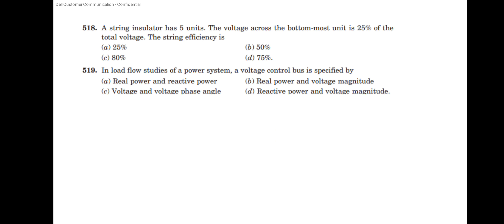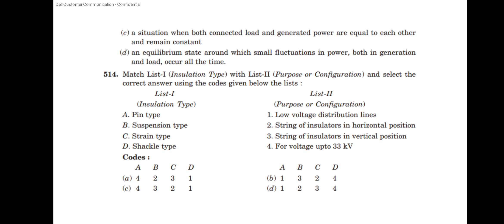A string insulator has 5 units and the voltage across the bottom-most unit is 25% of the total voltage — the string efficiency answer is option C, which is 80%. For load flow studies of a power system: voltage bus is specified by voltage bus real power and reactive power. The correct answer is option B — real power and voltage magnitude.